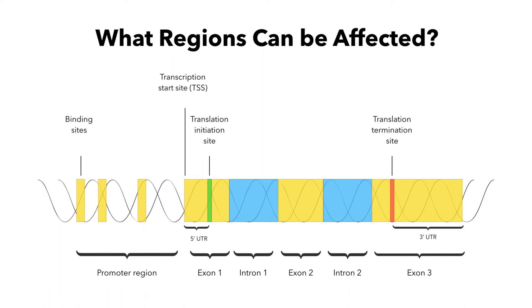As the DNA is wrapped around the histones and can be more or less accessible, various positions of the DNA are affected. These include the promoter region, transcription start sites, the introns, and the exons of genes. Each one of these elements can have a significant effect on the level of gene expression, on alternative splicing, as well as other downstream regulation of pathways.